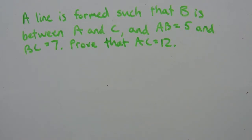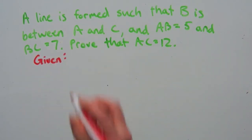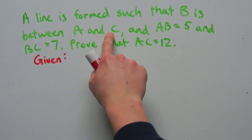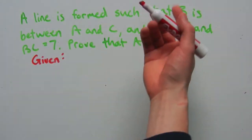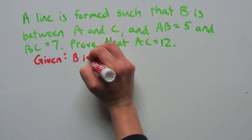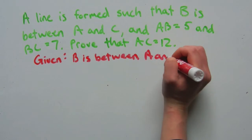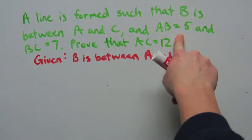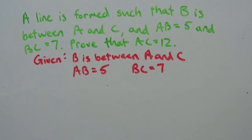Step two — list the given information. Given: B is between A and C, because the problem states a line was formed such that B was between A and C. We're also given that AB equals 5 and BC equals 7.